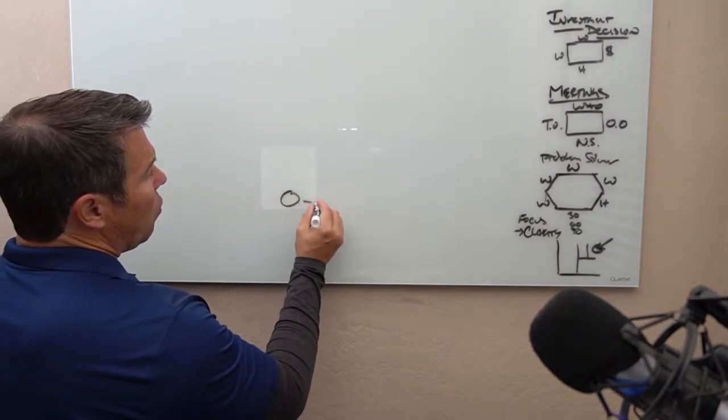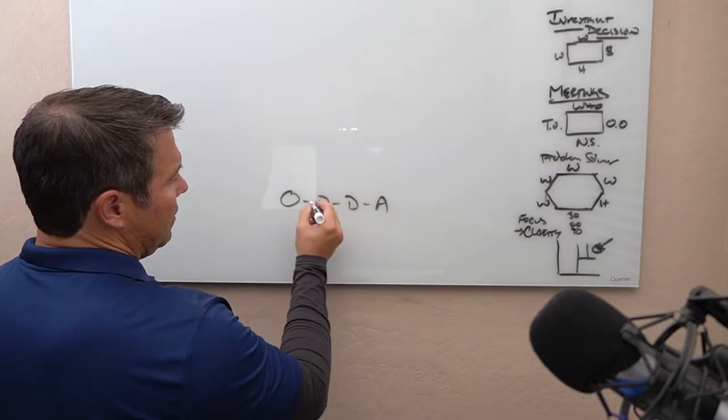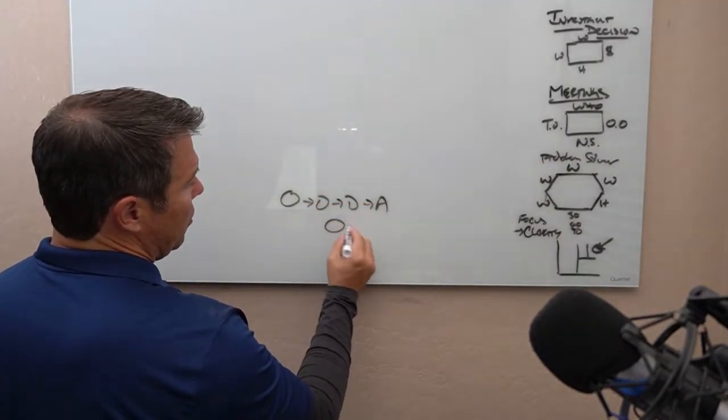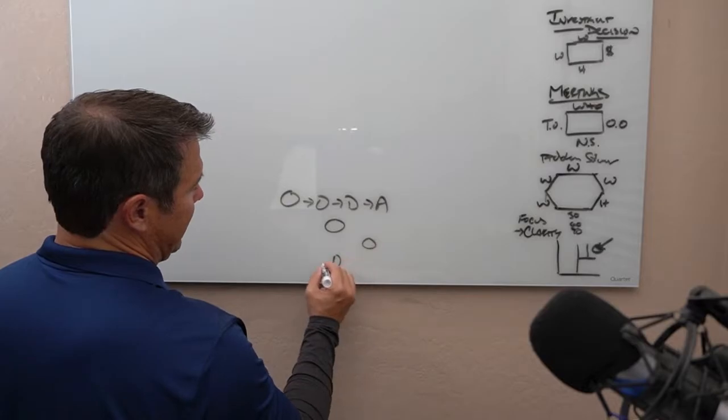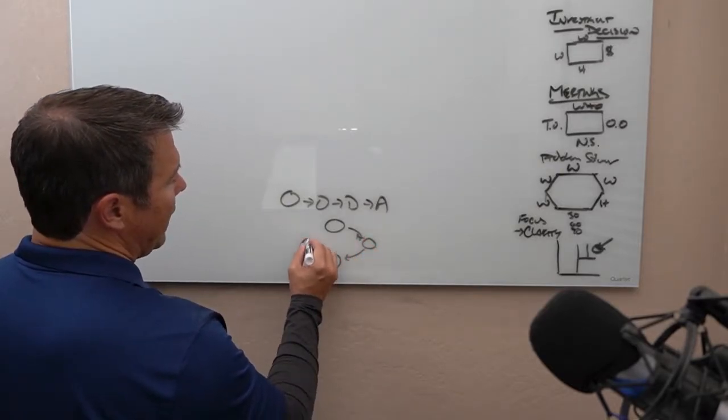It's observe, orient, decide, act. And this is the OODA loop. So the way that we should really write this is OODA. And as you go through this, you loop back to observe.